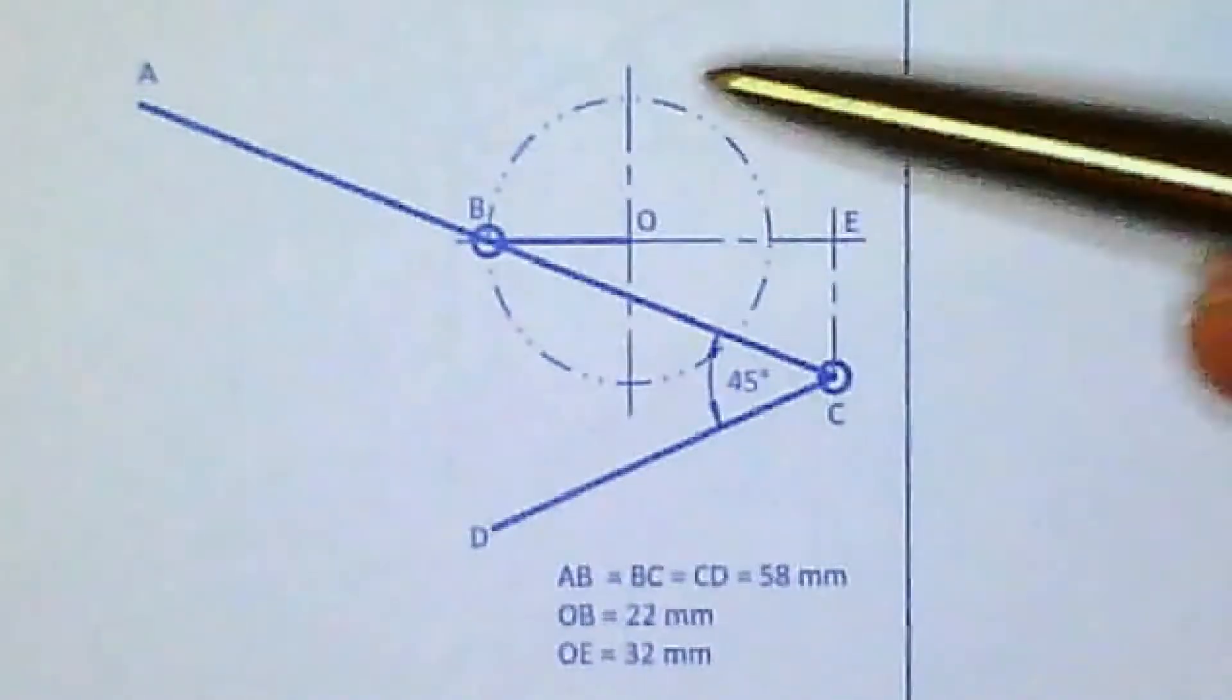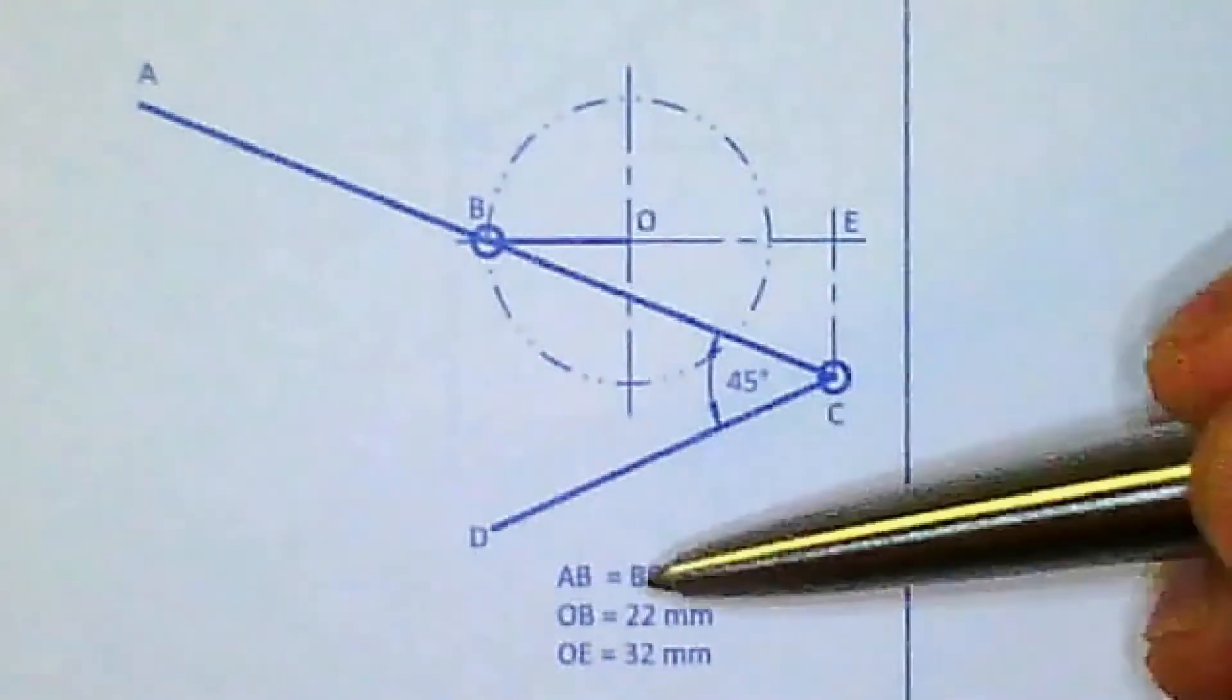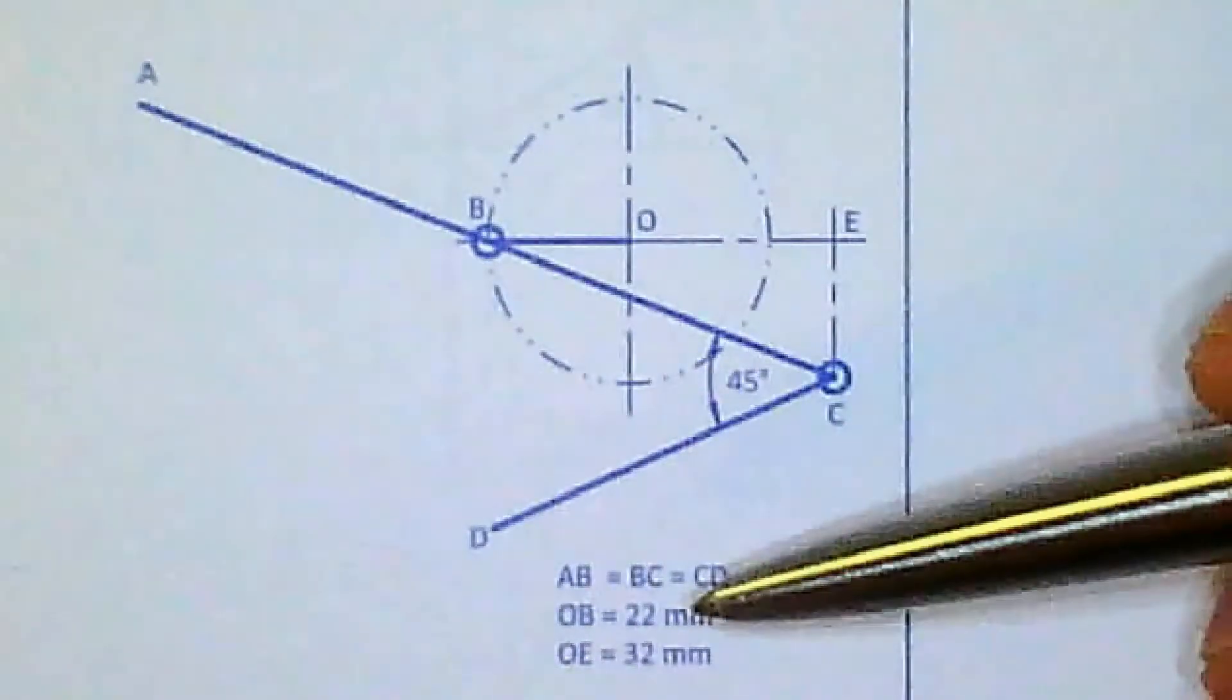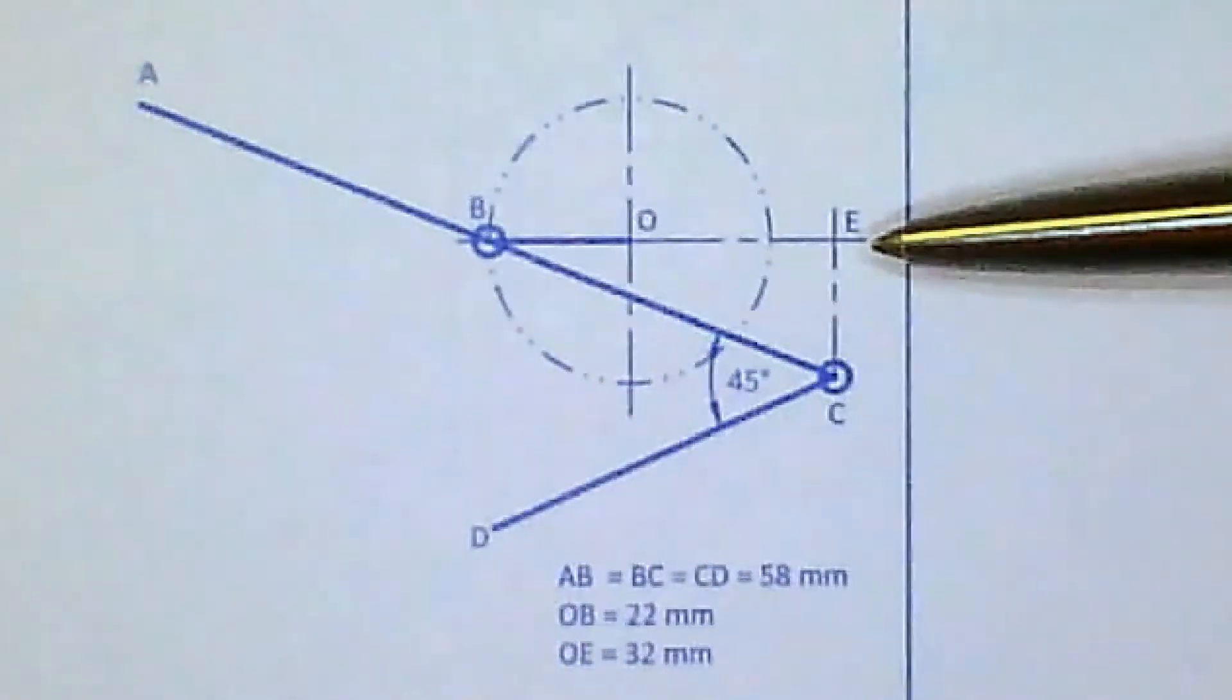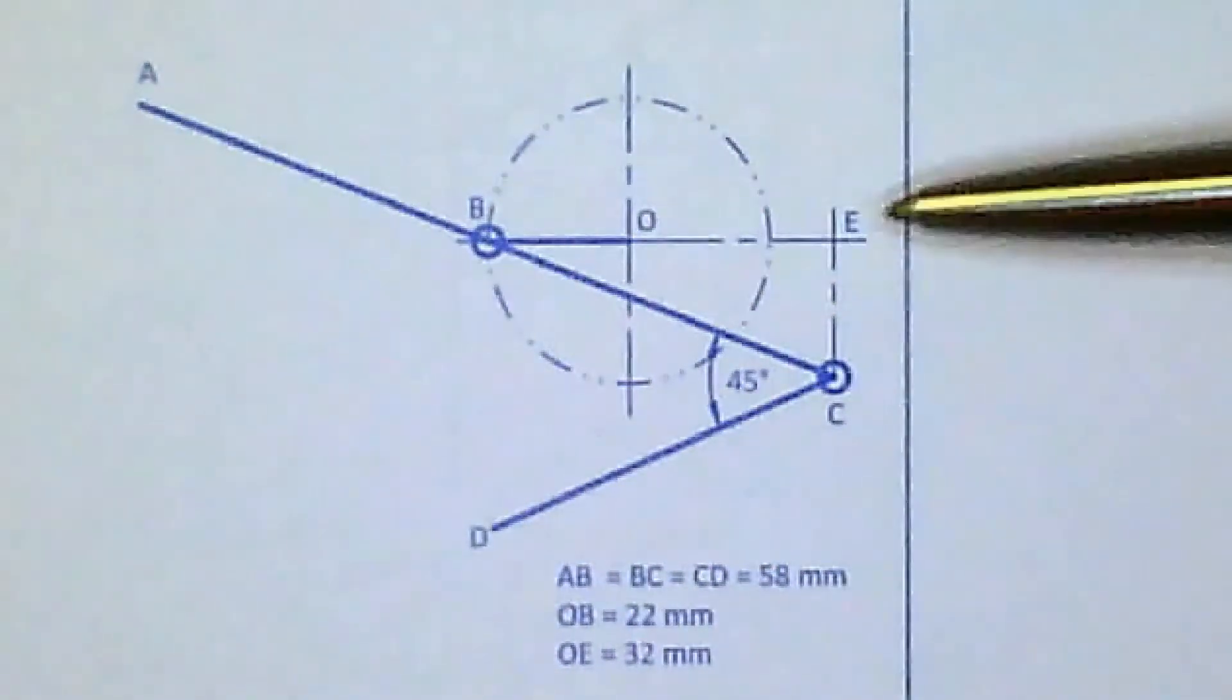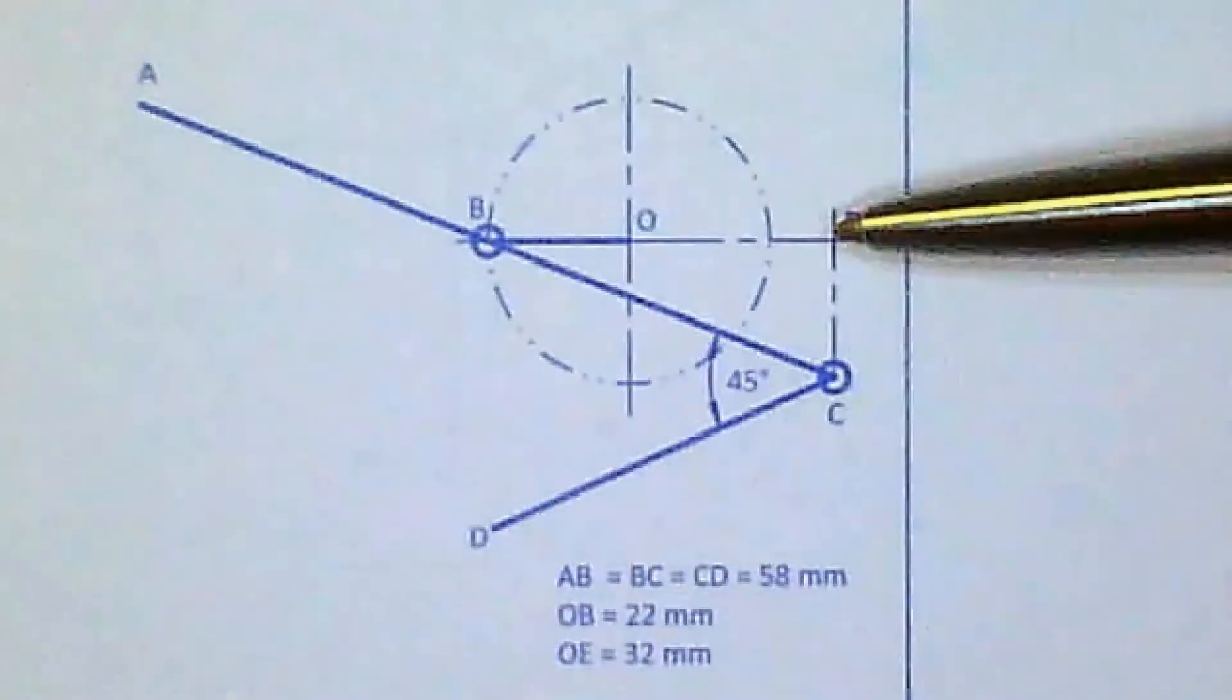So to set up this drawing, what you're going to do is, we know we're going to start by drawing the circle, and it has a radius of 22. Then you're going to divide it into 12, and then you're going to measure from O to E. It tells you it's 32, so from O to E, that distance is 32, so another 10 millimeters past or beyond the circle.